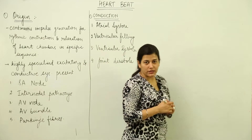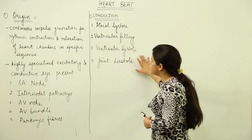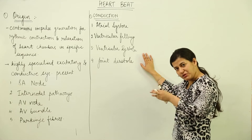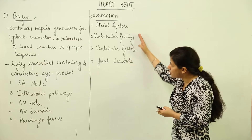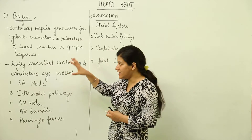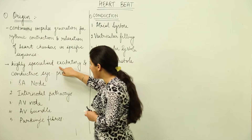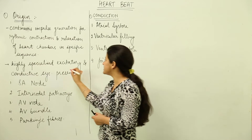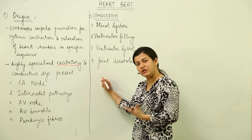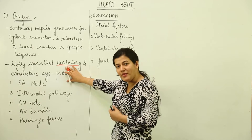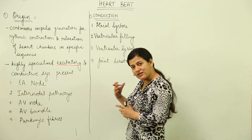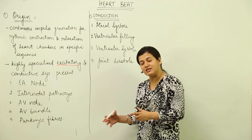These are the four sequential steps in which the conduction of heartbeat takes place. The impulse is generated and passed through the heart chambers in such a way that this sequence is maintained and pumping of blood takes place continuously. This conduction is carried out by a highly specialized excitatory and conductive system. When I call it excitatory, please remember it is self-excitatory — the excitation does not come from the neural system.